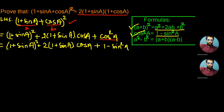Now, as we know, one can be given any power. So when compared to sin square A, we give the same power — that is, square — to 1. This can be continued as one plus sine A whole square plus 2 times one plus sine A.